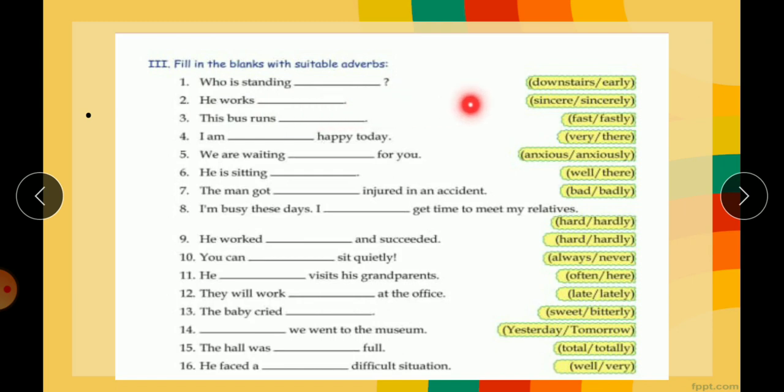Like, who is standing downstairs? He works sincerely. This bus runs fast, not fastly. See children, fast is an adverb. Fastly is an adjective, it means very tight. So here you have to use the first one. I am very happy today. We are waiting anxiously for you.